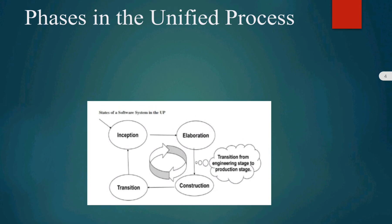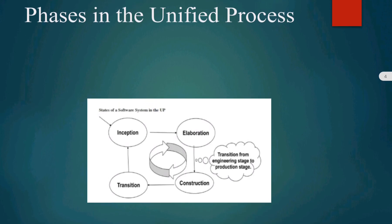The next important thing is: what are the different phases of the Unified Process? The Unified Process divides the project into four phases: number one, inception phase; number two, elaboration phase; number three, construction phase; number four, transition phase.